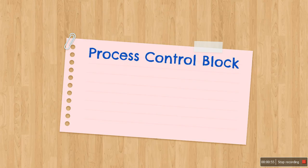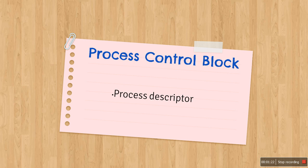Let us start with what is a process control block. If you have watched my previous video, whose link I have given in the description box below, you will understand what a process is. Now, the operating system keeps an internal data structure to describe each process it manages, and this data structure is nothing but the process descriptor or the process control block. When an OS creates a process using a fork system call, it creates this process control block also.